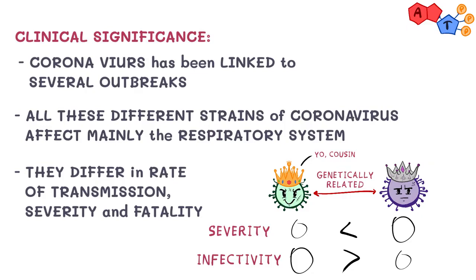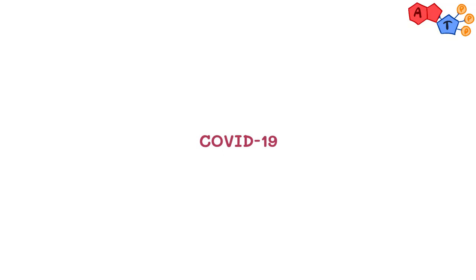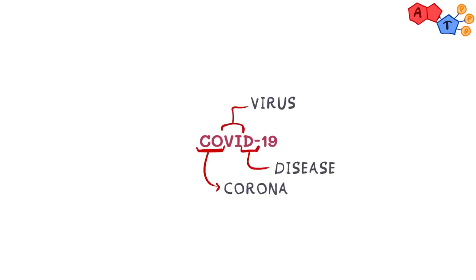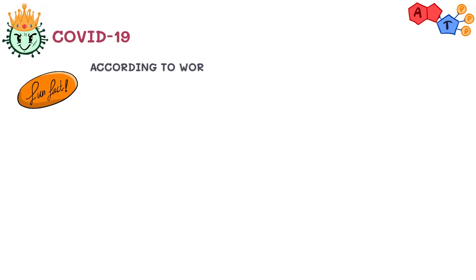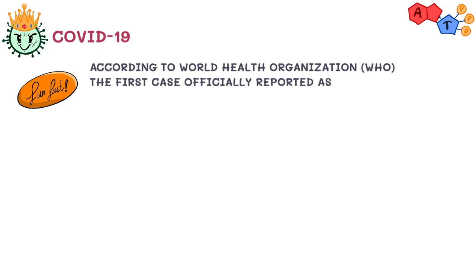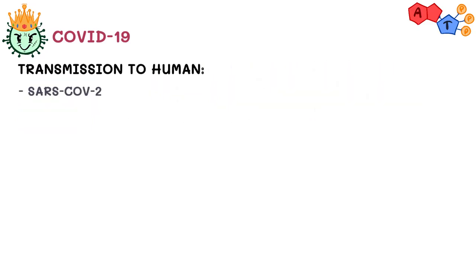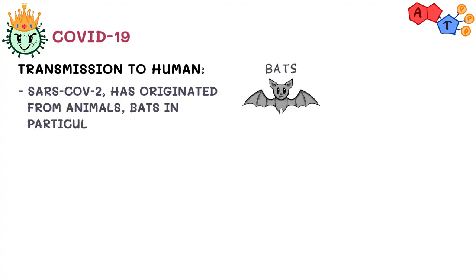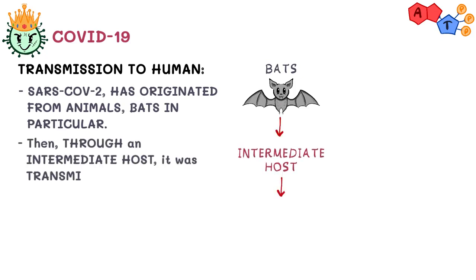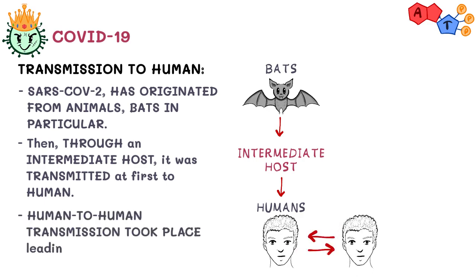Now we hope that you have a good background knowledge about coronavirus. Let's have a closer look at COVID-19. Let's first dissect the word: Co is for corona, V for virus, D for disease, and 19 for 2019, the year it was discovered. Fun fact — according to the World Health Organization, the first case officially reported as pneumonia of unknown cause in Wuhan, China, was on the last day of 2019, literally the 31st of December 2019. It's believed that SARS-CoV-2 has originated from animals — bats in particular — due to genetic similarities. Then through an intermediate host it was first transmitted to humans, and human-to-human transmission took place, leading to this pandemic.